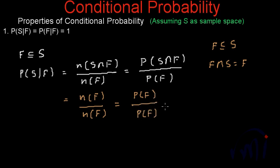And what is this? This is probability of event F happening where F has already happened. And what is its value? It is nothing but equal to 1.